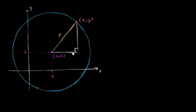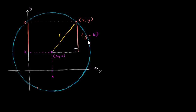What's this height going to be? We know this point right over here has a y-coordinate of k, and this point over here has a y-coordinate of y. So this distance right over here is going to be y minus k.